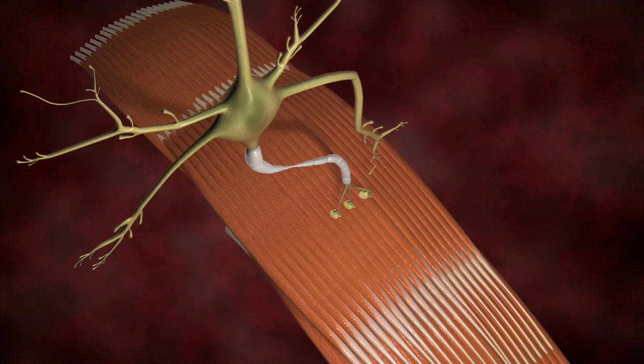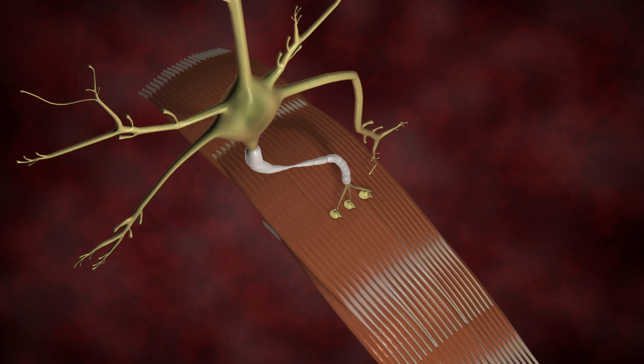Motor neurons break down in Lou Gehrig's disease. Without stimulation, voluntary muscles progressively atrophy.